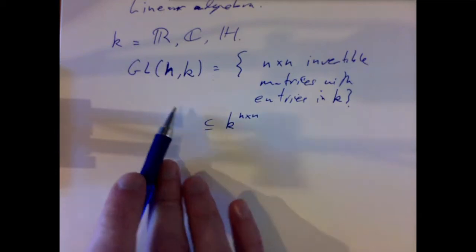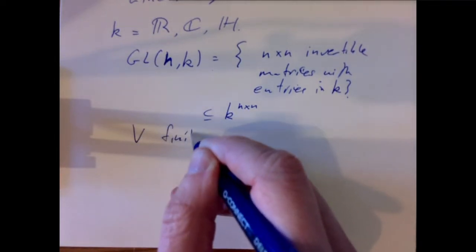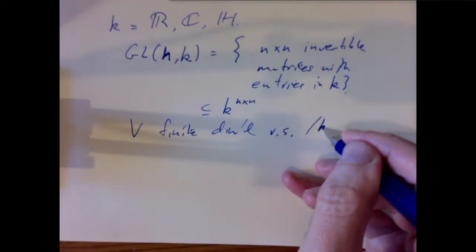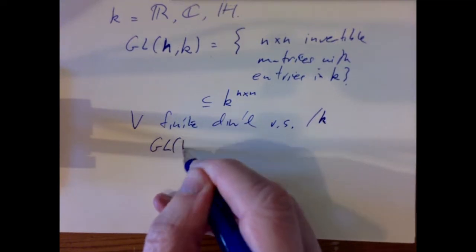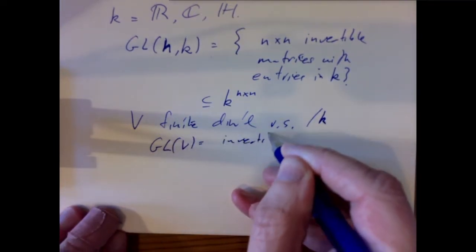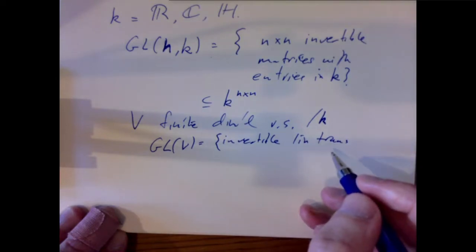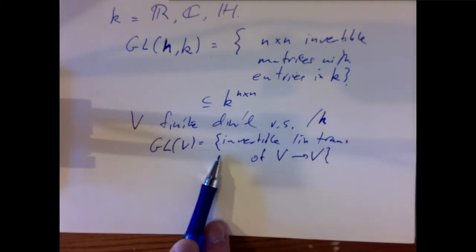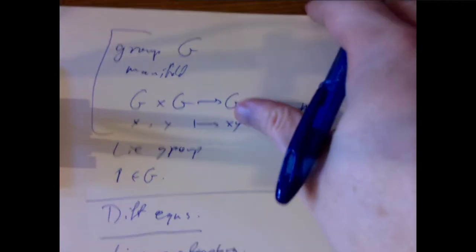We can see immediately that GL(n,k) is already an example of a Lie group. Similarly, if we had a finite-dimensional vector space V over the field k, we could let GL(V) be the set of invertible linear transformations — k-linear transformations of V to V. That's also a Lie group because it's isomorphic to GL(n,k) by picking a basis. Now if we have a subgroup which is also a submanifold, we'll call it a Lie subgroup.